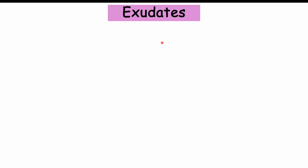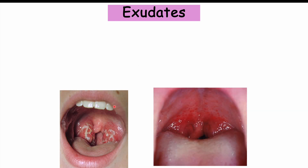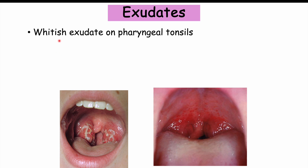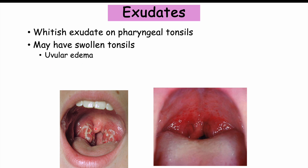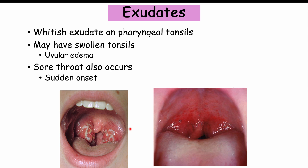We're also more likely to see exudates — a whitish material on the pharyngeal tonsils, as shown in this image. The tonsils may also be swollen, as you can see in both images here. We can also see uvular edema; the uvula is the structure that hangs in the back of the throat, and it can become swollen as well. Since this is a pharyngitis, there will be a sore throat, often with a sudden onset — patients all of a sudden develop a sore throat.